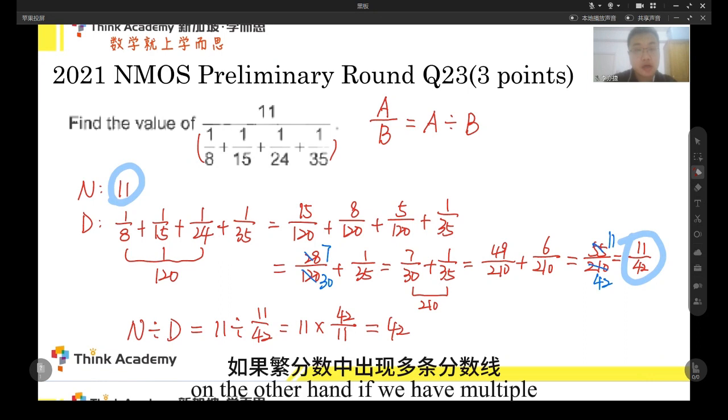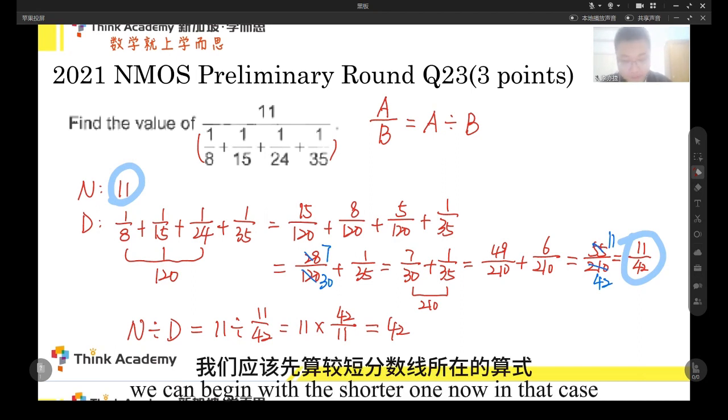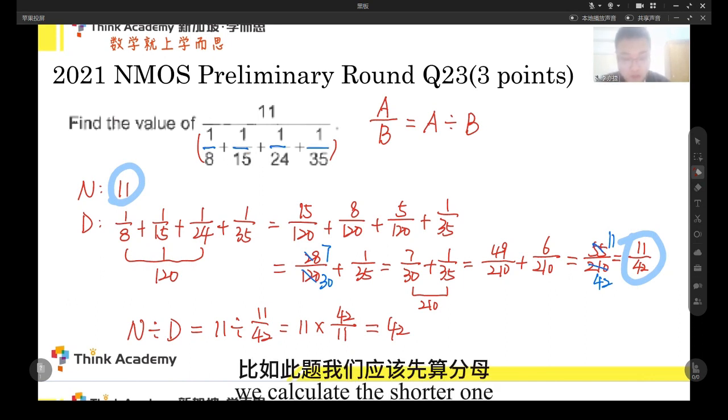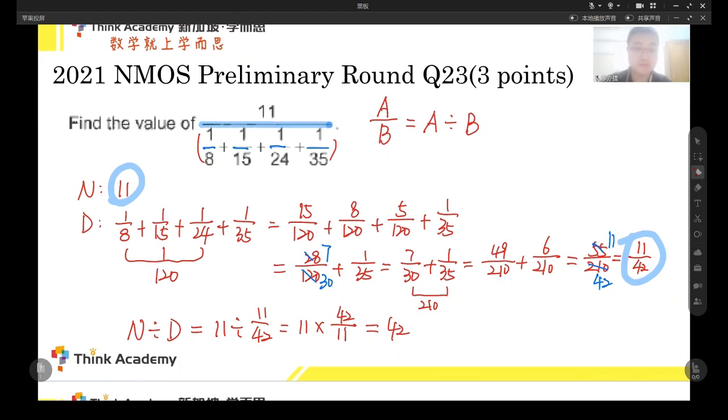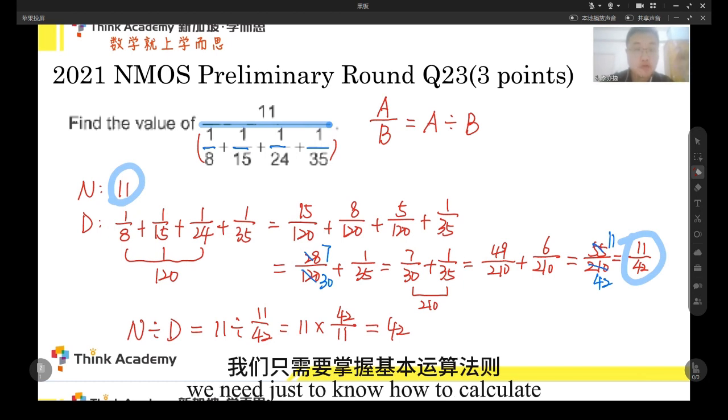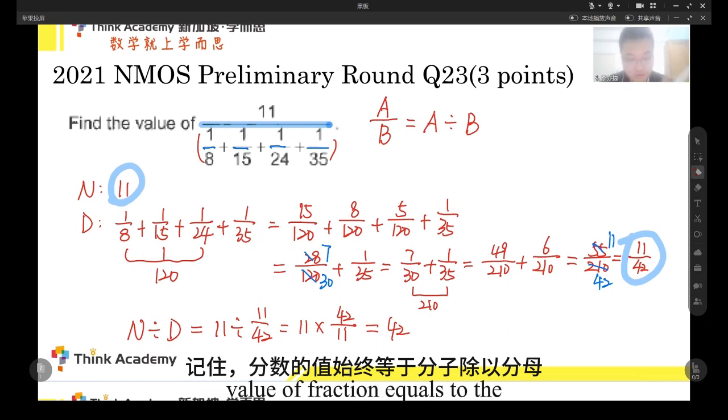There is an order on the other hand. If we have multiple fraction lines here, we can begin with the shorter one. We calculate the shorter one, and when we have the value, then we put it in the longer one. So the basic question is simple. We just need to know how to calculate it, the rule to calculate it. Then remember, the value of fraction equals to the numerator divided by the denominator. And that's all.